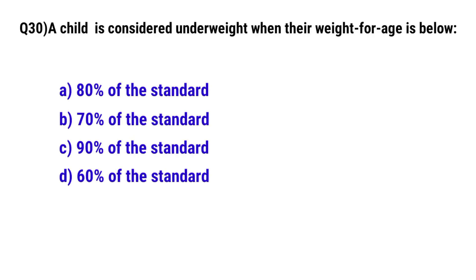Question number thirty: A child is considered underweight when their weight per age is below. The correct option is B, 70% of the standard.